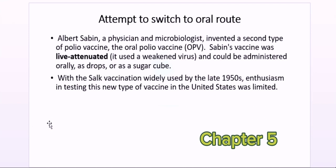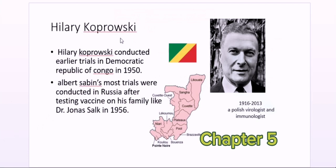When the Salk IPV vaccination was widely used by the late 1950s, enthusiasm for testing this new oral vaccine type was limited. The Polish virologist Hilary Koprowski came to help, and Dr. Sabin tested the OPV in the Democratic Republic of Congo in Africa in the 1950s. Most of Sabin's trials, however, were conducted in Russia. After testing the vaccine on his own family in 1956, similar to what Dr. Salk had done, the Sabin vaccine trials proceeded under Russian supervision.